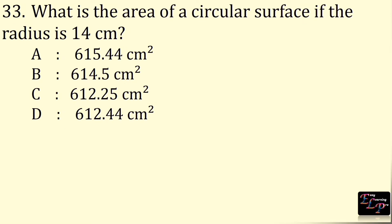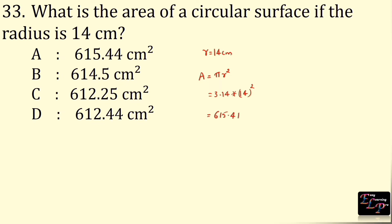What is the area of a circular surface if the radius is 14 cm? Radius is 14 cm. Area of a circle is πr² = 3.14 × 14² = 615.44 cm². The answer is option A, 615.44 cm².